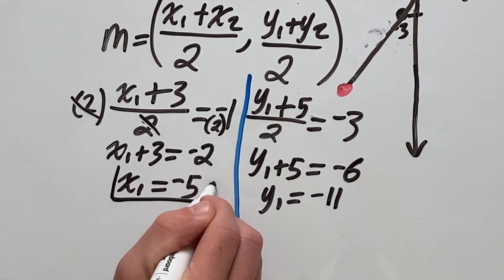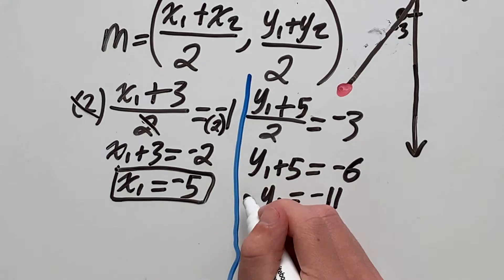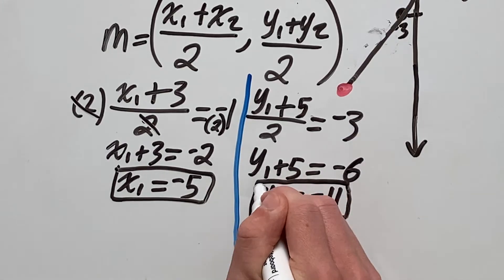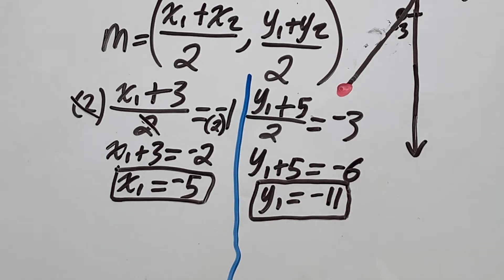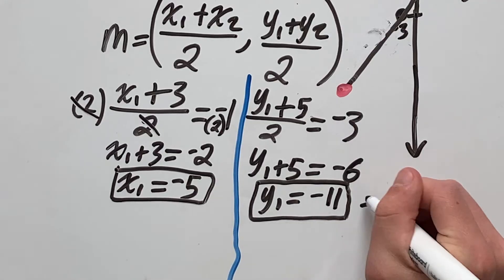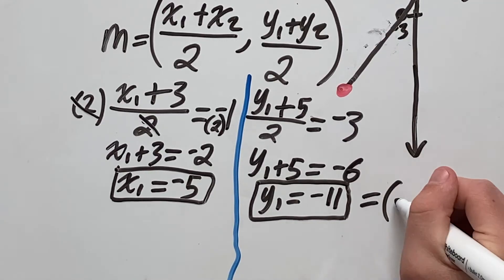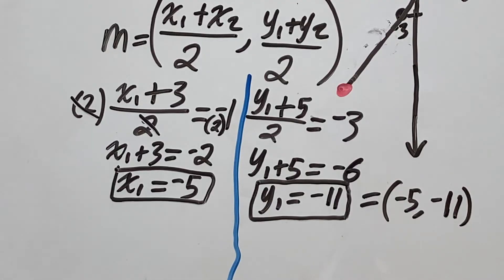So that gives us our x-coordinate of our endpoint as well as our y-coordinate of our endpoint. So the endpoint for this case is negative 5, negative 11.